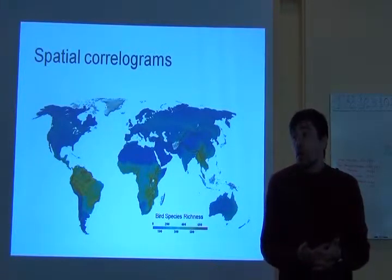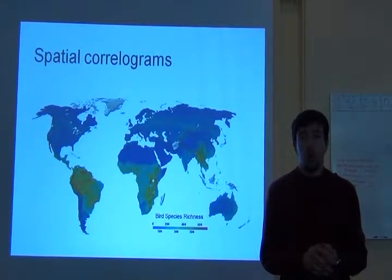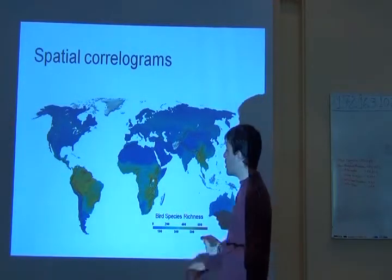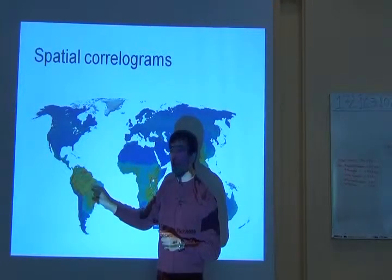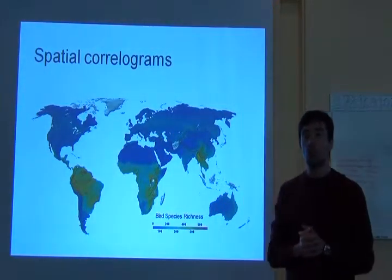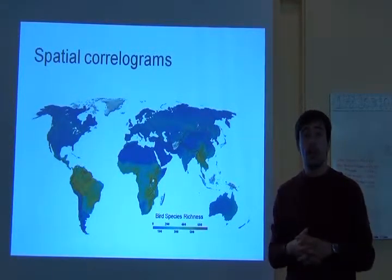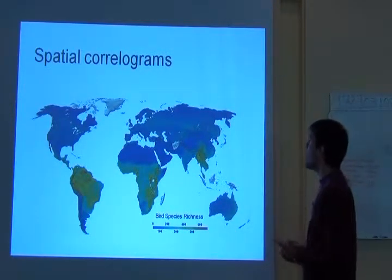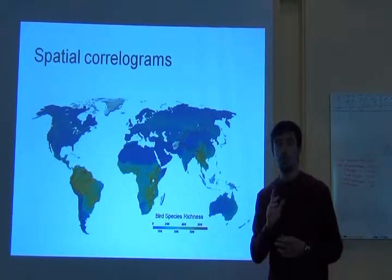However, frequently we want to know how much everything is related to everything, not only nearby sites. What if I want to know the relationship between sites over here and over there? I'm asking not just about similarity or dissimilarity between sites that are nearby — I want to know the relationship between sites that are even further away. In that case, we need to calculate multiple Moran's I values, not only one but multiple ones.